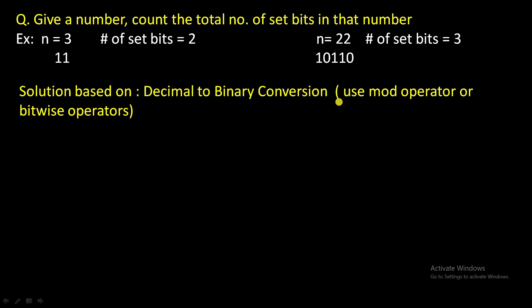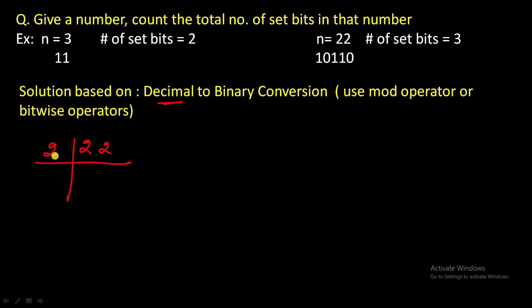The solution is based on how we convert a decimal number to binary. We use the repeated division method. For example, with 22: divide by 2, quotient is 11, remainder is 0. Divide 11 by 2, quotient is 5, remainder is 1. Divide 5 by 2, quotient is 2, remainder is 1.